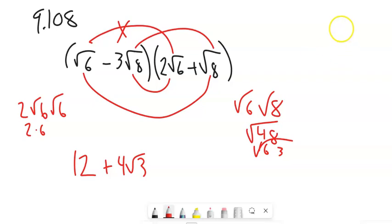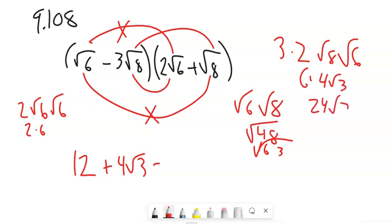And of course, you can do these multiplications in whatever order works for you. I'm going to do this one. Negative 3 root 8 times 2 root 6. So that is going to be 3 times 2 times root 8 times root 6. So 3 times 2 is 6. We just had that is 4 root 3. So 24 root 3. So it should be minus 24 root 3.